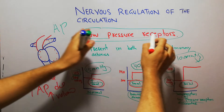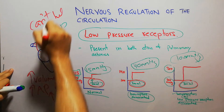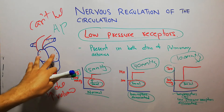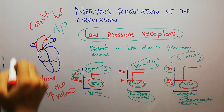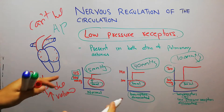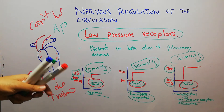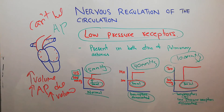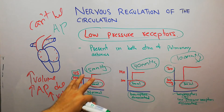Normally, if arterial pressure is high due to systemic hypertension, these low pressure receptors cannot help — they cannot help in a systemic increase. But if there is an increase in arterial pressure due to extra volume, and there is extra volume coming into the low pressure side, then these low pressure receptors come into action and help to control the increase in arterial pressure.